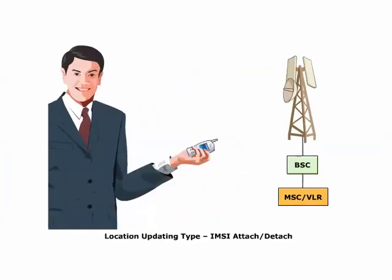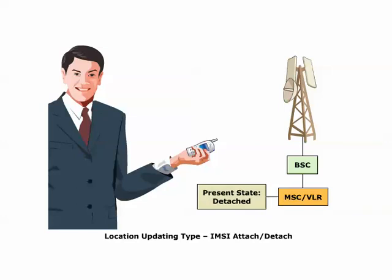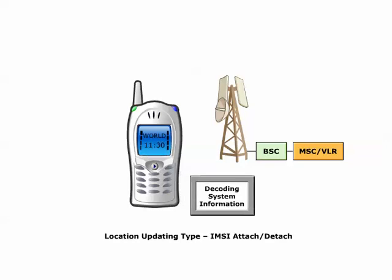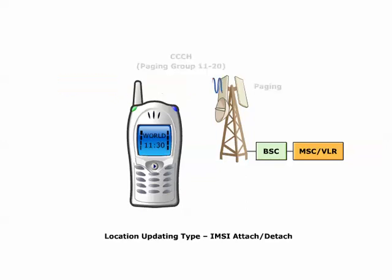The IMSI attach-detach operation is an action taken by an MS to indicate to the network that it has entered into idle mode in active state. When an MS is powered off, an IMSI detach message is sent. A flag is set in the VLR to indicate the present state of a certain MS, preventing unnecessary paging of powered-off mobiles. When an MS is powered on, it tunes to the BCCH carrier and decodes the system information data, performs an evaluation taking into account the IMSI number that determines to which paging group it belongs. When there are no paging messages for a certain paging group, dummy paging will be sent instead, and the MS stays in sleep mode to minimize power consumption between its own paging group occurrences.